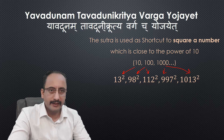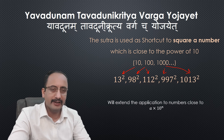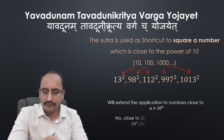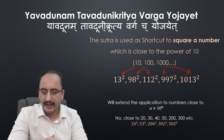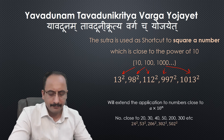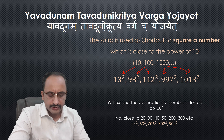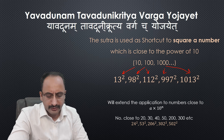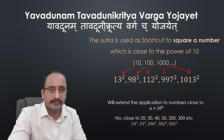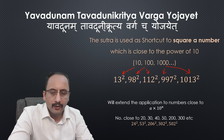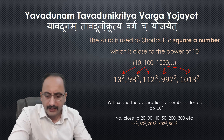In my next video, I promise we will extend the application of this sub-sutra to numbers of the form A times 10 raised to the power N. For example, numbers like 24², 53², 206², 302², and 502² — we will discuss those in the next video.